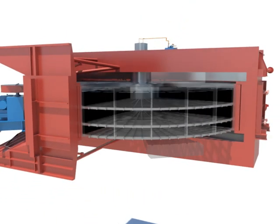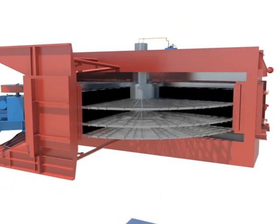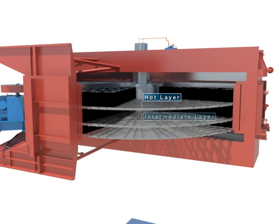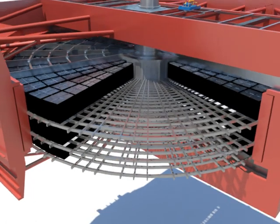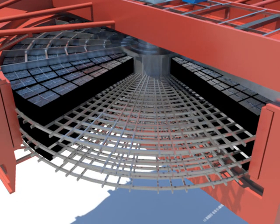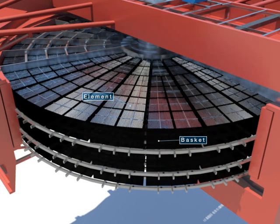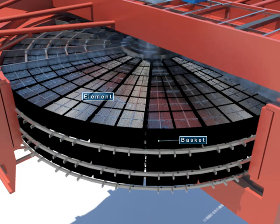The heating element consists of three layers, which are the hot layer, intermediate layer, and cold layer. Each element mass is put in a basket and installed for easy handling.